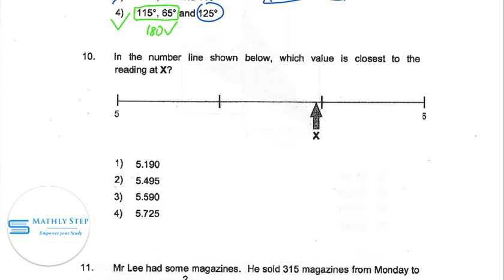So for question 10, in the number line shown below, which value is closer to the reading at x? This is 5, actually this is 6, and between 5 and 6 is divided into 3 intervals. For each interval is about 0.33. So this is 5.33, this is 5.67. So it's very close to 5.67.